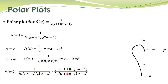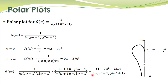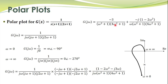We can optionally multiply by minus j omega to clear the j in the denominator, but it is easier to bring j into the numerator. This way we split the complex function into its real part and imaginary part.